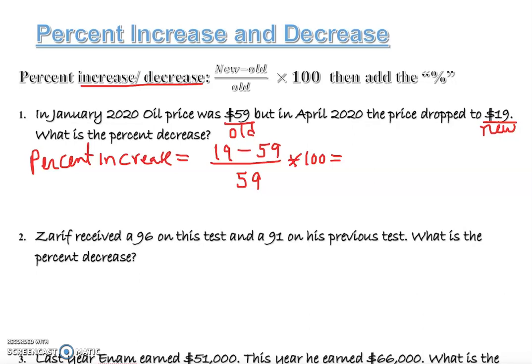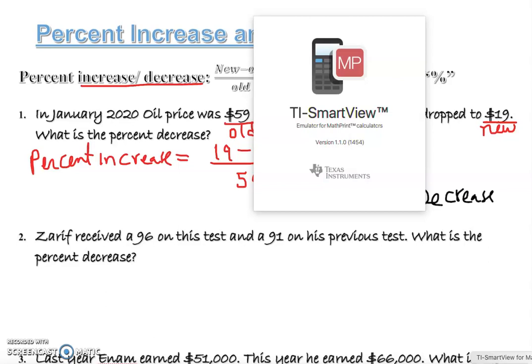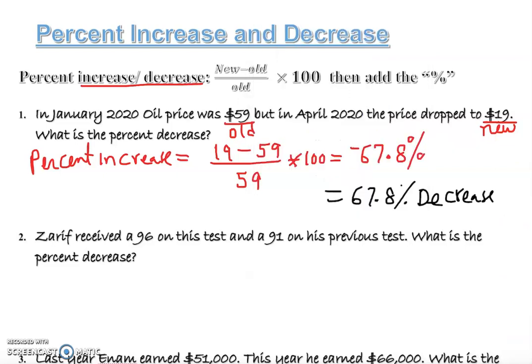You do the division and multiply, and we have done so many videos. I'm going to use a calculator here to show you. The calculator is going to give you negative 67.8%. Now how do we write our answer? We write our answer like this: 67.8% decrease. That was very sad on the oil market actually, so that much percentage decrease.